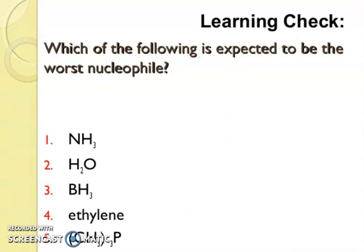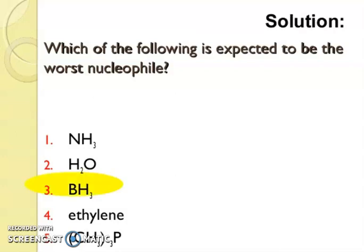Now which of the following is expected to be the worst nucleophile? Check, the answer is BH3.